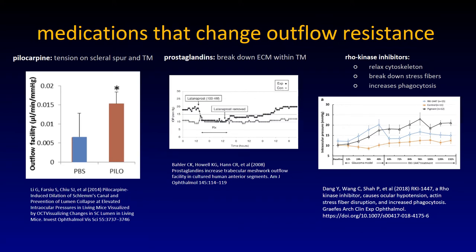First, let's start with something classic: medical modulation. The medications that change outflow resistance are quite a few. Pilocarpine creates tension on the scleral spur and on the trabecular meshwork by pulling on the scleral spur and through insertions from the ciliary body into the meshwork. A very nice study shows that even in the mouse, facility increases and Schlemm's canal widens by pulling on the meshwork of the scleral spur. So the mouse may be a much better model than I used to appreciate.